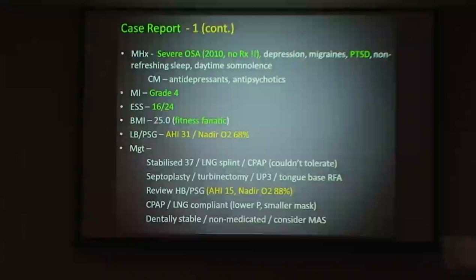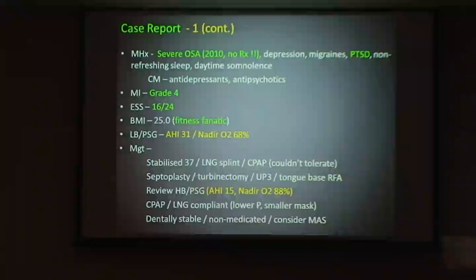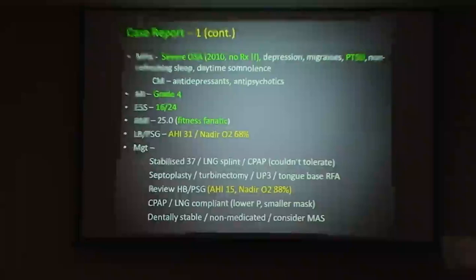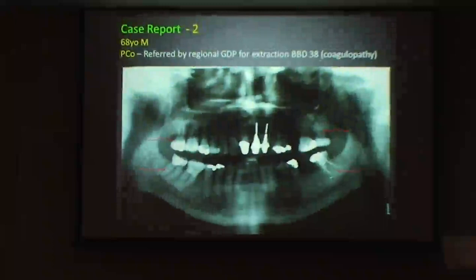He had a lab-based sleep study and came in with an AHI of 31 and an oxygen drop to 68%. We stabilised his molar, put him on a lower neutral Gelb splint, and got him onto CPAP straight away. He hated CPAP, so he went and had surgery: septoplasty, turbinate clearance, UP3 trimming of the palate, and tongue-based radiofrequency ablation to shrink the tongue. On a review home-based sleep study his AHI was now 15 and oxygen had climbed. Now he uses CPAP with a small mask and low pressure, loves it, wears his nightguard. He did not want orthodontic treatment.